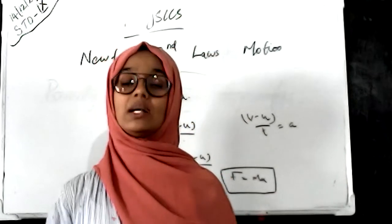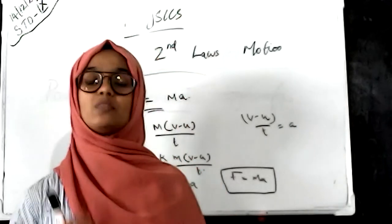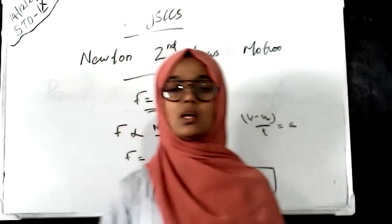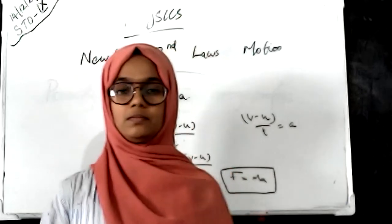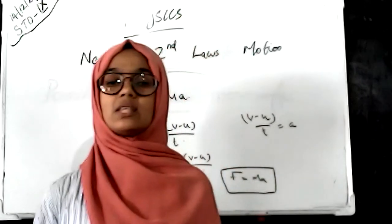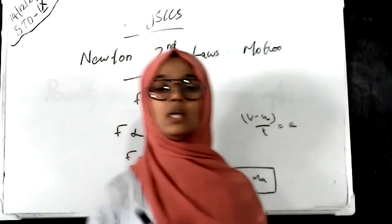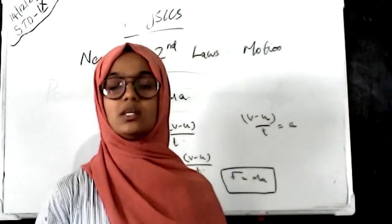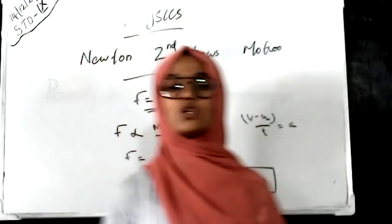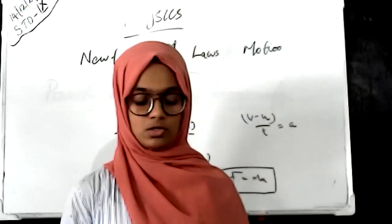Today we discussed what inertia of a body is, and there are two types: inertia of rest and inertia of motion. Inertia is the inability to remain in the original state of rest or uniform motion of a body. These two types of inertia appear in different daily-life experiences. We also discussed Newton's second law of motion and how momentum is related to it. Momentum is the product of changing velocity and mass, and the rate of change of momentum is proportional to the applied force. Thank you.